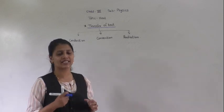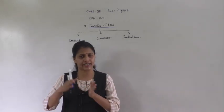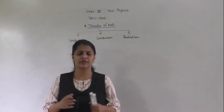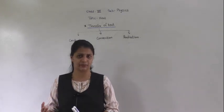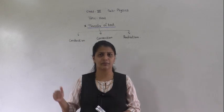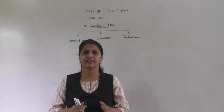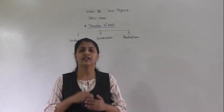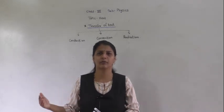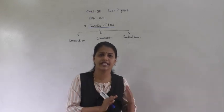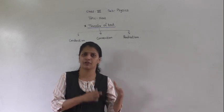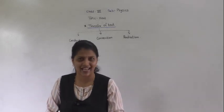In the transfer of heat, the concept is the flow of heat from higher temperature to lower temperature. For example, if anyone has fallen ill and your friend is having a high temperature, how do you recognize that? When you touch that person, you can get the sensation that the body is hot. Because your hand is cooler, and when you sense the hot body, you can feel it as hot. So, the flow of heat from higher temperature to lower temperature is called the transfer of heat.